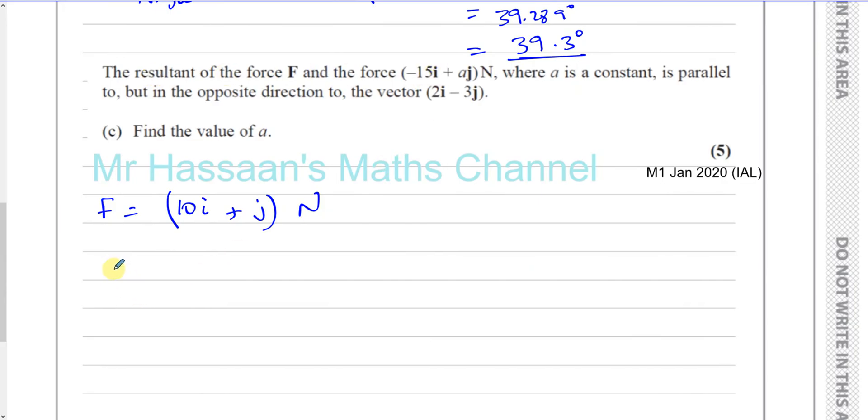Okay, so the resultant of the forces, that means when you add them together. So, when you have 10i plus j, I'm going to write this as a column vector to make life easier. That's the force F, plus minus 15i and Aj. And it's equal to, or it's parallel to, some constant, some multiple of, let's say K times, not this vector, but the direction which is opposite to this vector. So, 2i minus 3j is like this. For us to go from here to here, the opposite direction would be minus 2i and plus 3j.